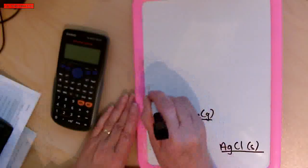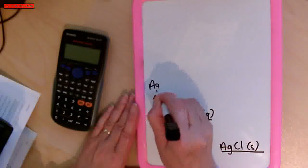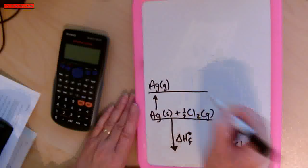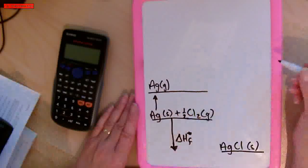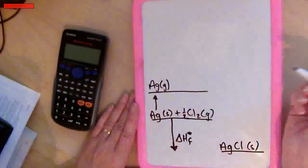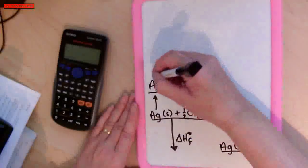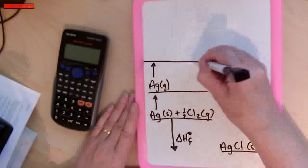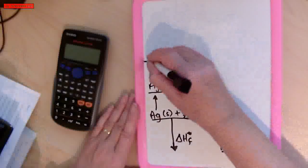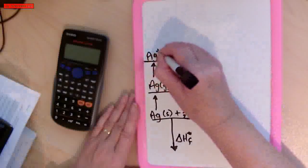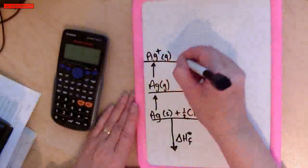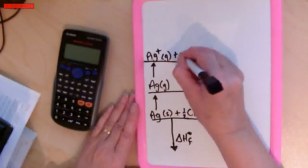So I'm going to turn it from silver solid into silver gas — atomise it or vaporise it. Then what I need to do is take the electron off the silver: first ionisation energy. So I'm going to take off the electron and make a silver ion in its gaseous state, with the electron released.